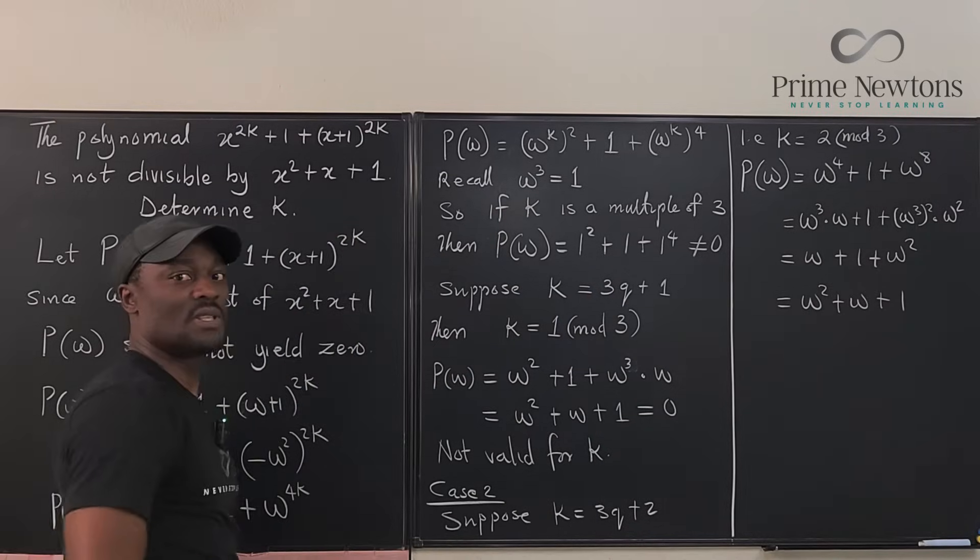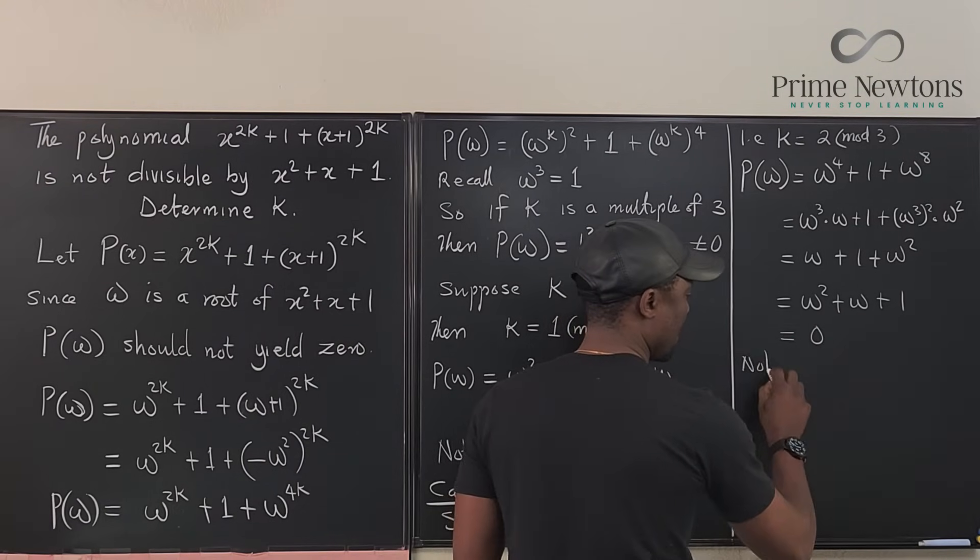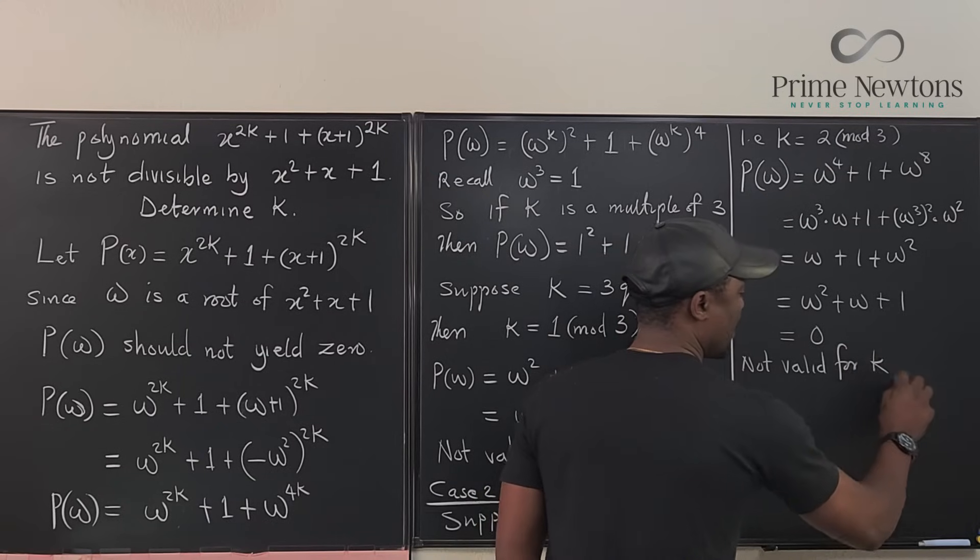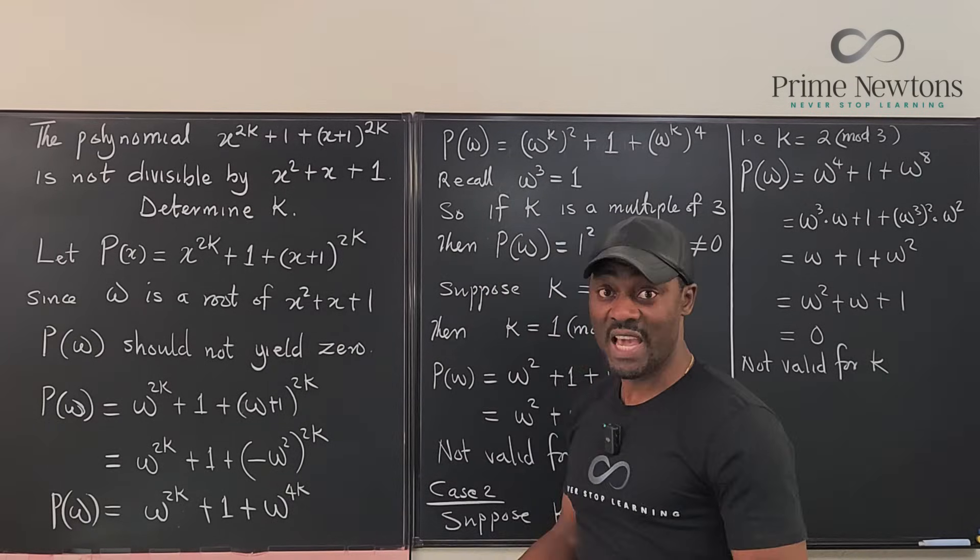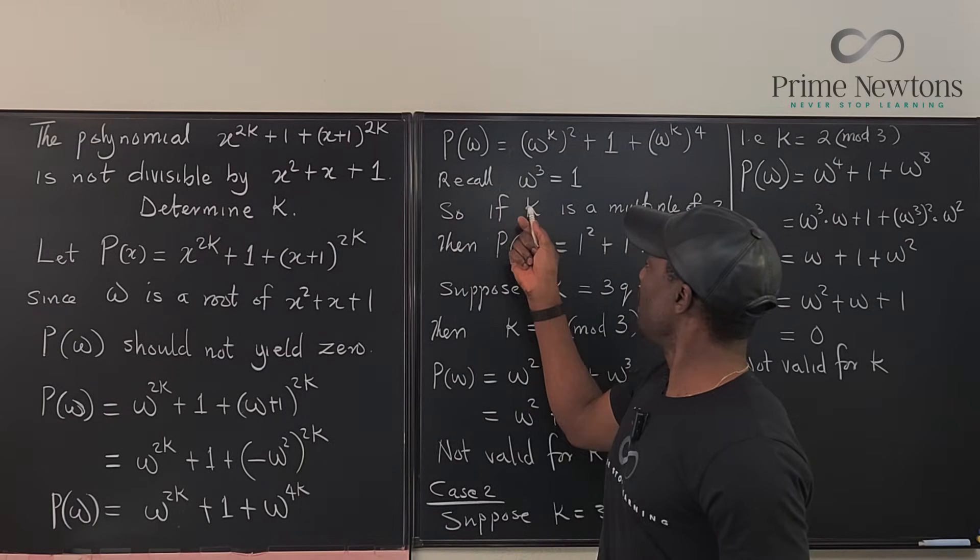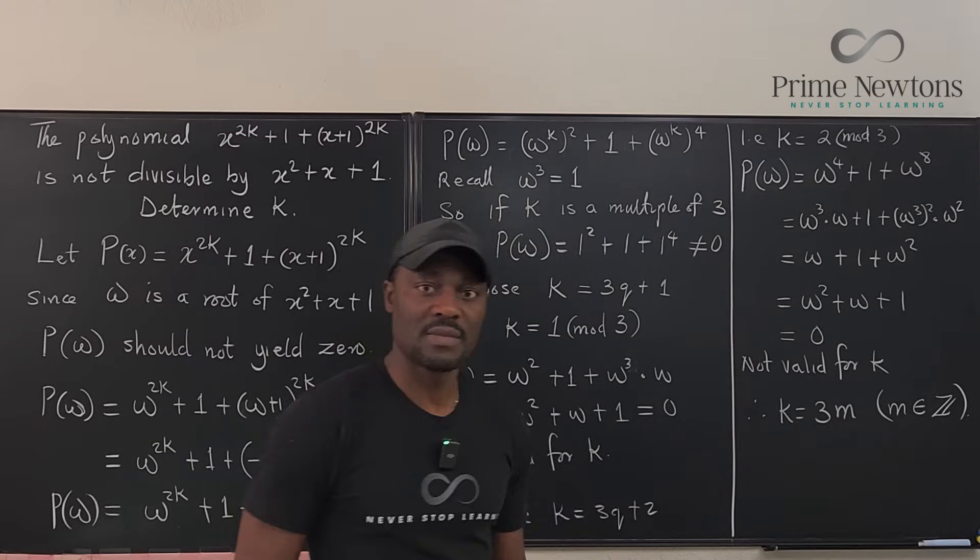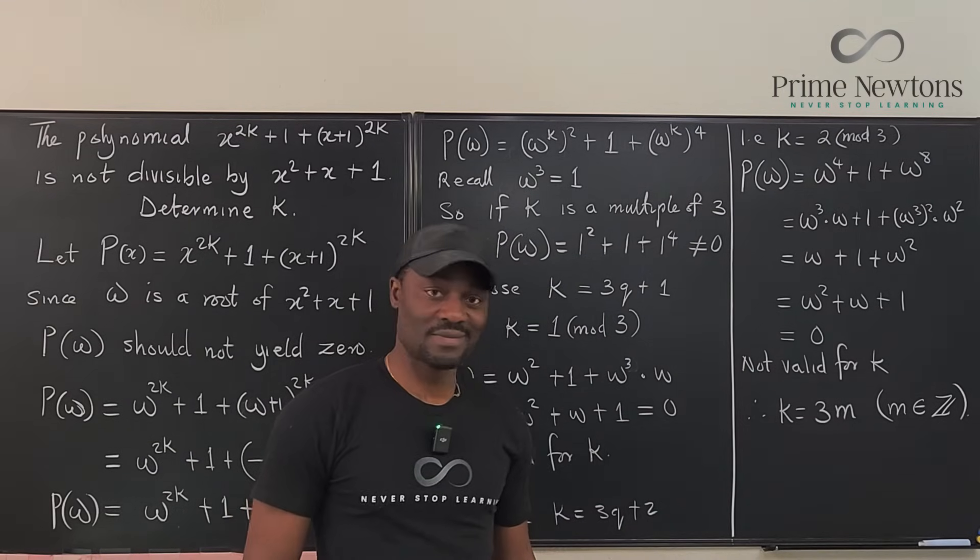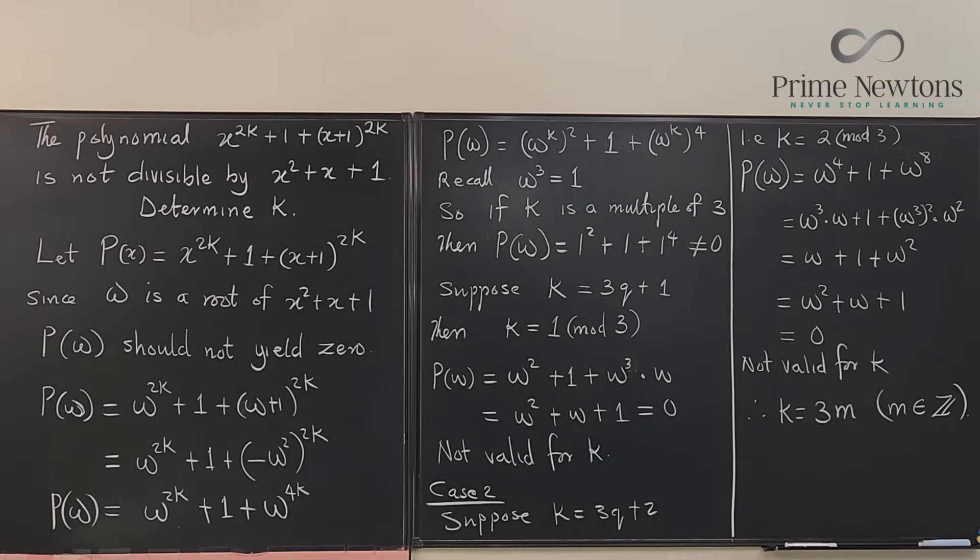So you're still going to end up with 0. Not valid for k. So, we cannot get 0. So, we've shown in three cases that the only case in which you're not going to get a 0 is when k is a multiple of 3. Therefore, k is any multiple of 3. Never stop learning. Those who stop learning, stop living. Bye-bye.